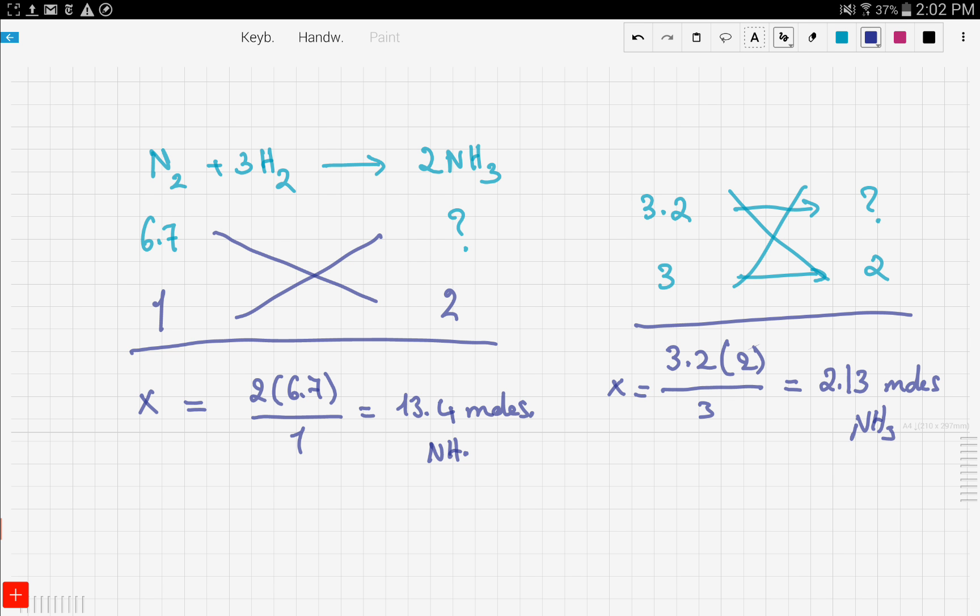Now you see here, we have two numbers. Which is the one realistically formed? The 13.4 or the 2.13? The smallest of these is the correct number. So this is the correct number. That means that hydrogen is the limiting reagent, denoted by LR, producing 2.13 moles of ammonia. And voila, you solved your question.